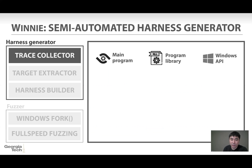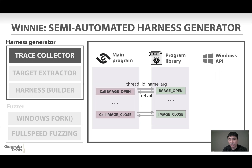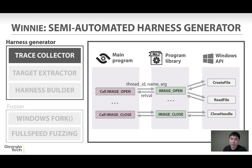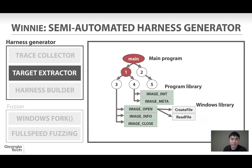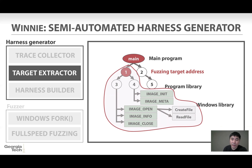Let's see the detail of the harness generator and the fuzzer. In the trace collector, we dynamically capture the run trace. We keep monitoring the relationship between the main program and libraries, or library to Windows APIs. If we observe any interaction between them, we dump that information, and we also dump Windows API related events if they are about files. Once we collect the dynamic run trace, we reconstruct the control flow graph from it, and then try to identify interesting fuzzing target functions. In this example, function number one or the main function could be the fuzzing target, because these functions can reach important file APIs like CreateFile or ReadFile.